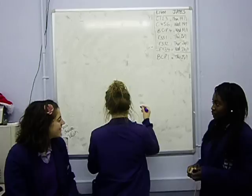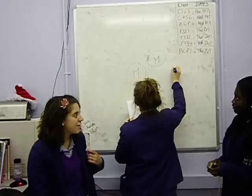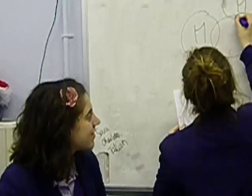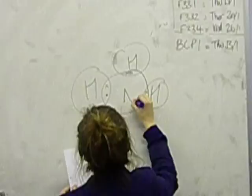Ammonia is a base, and it's got different crosses and dots. So it should be like this, shouldn't it?